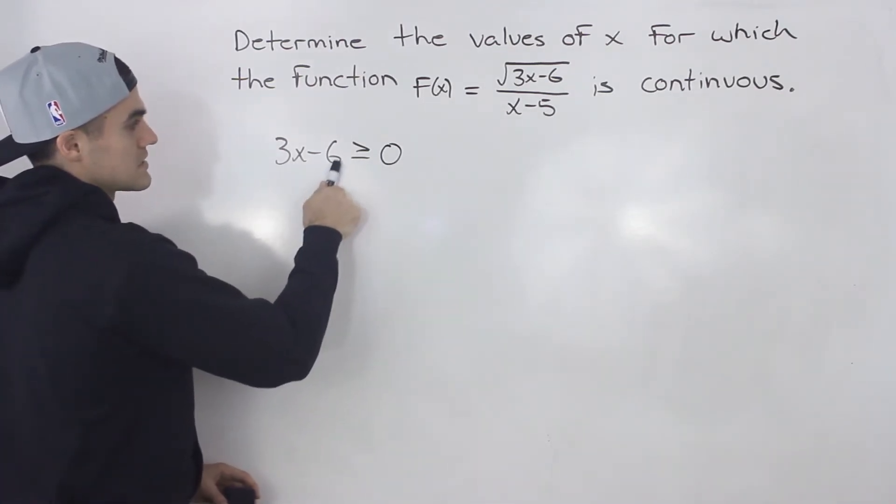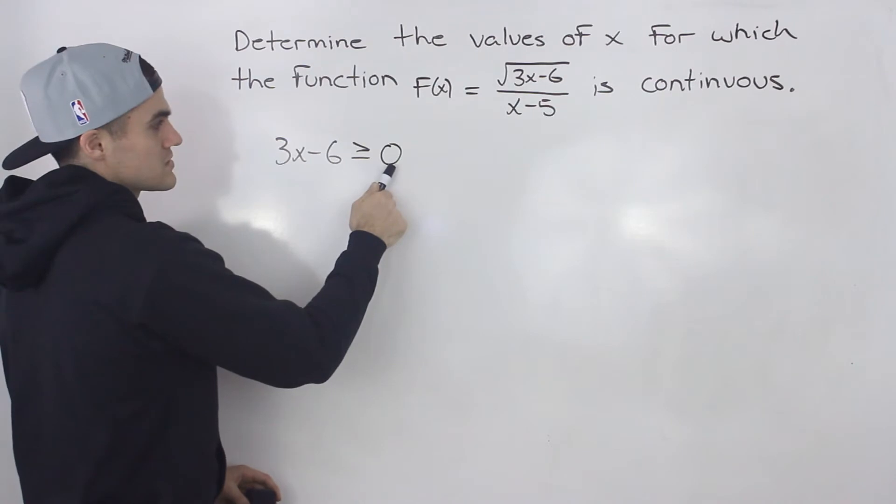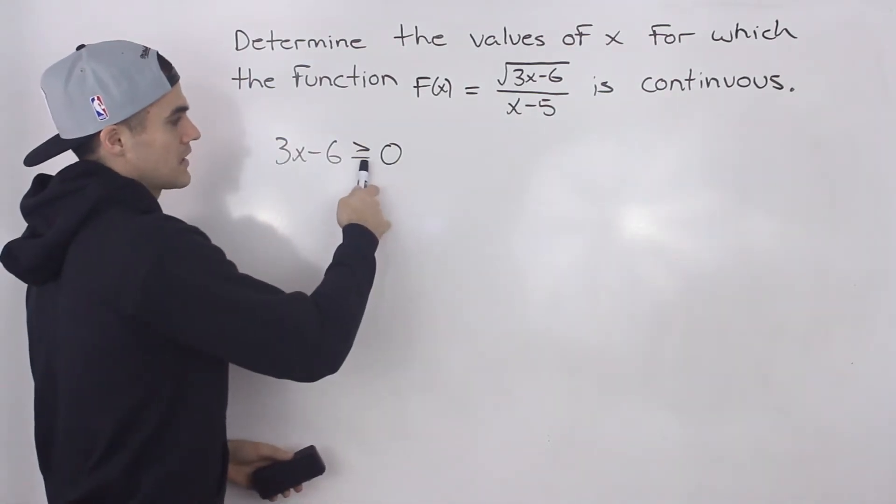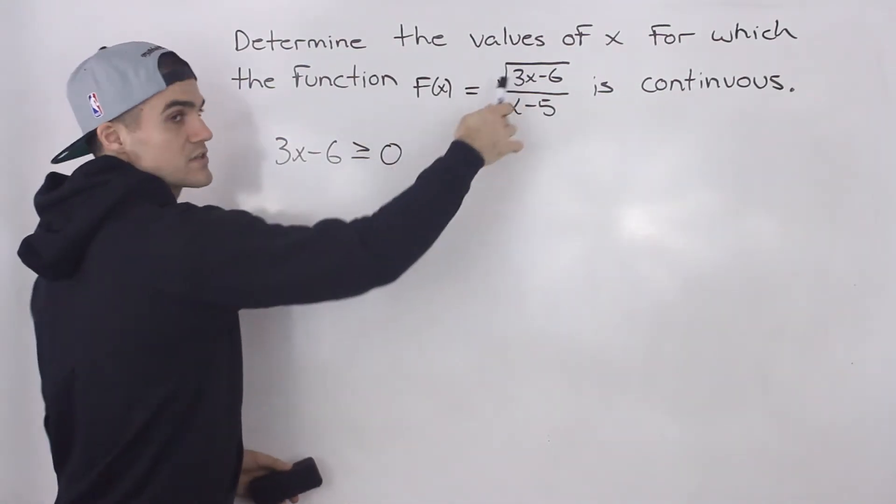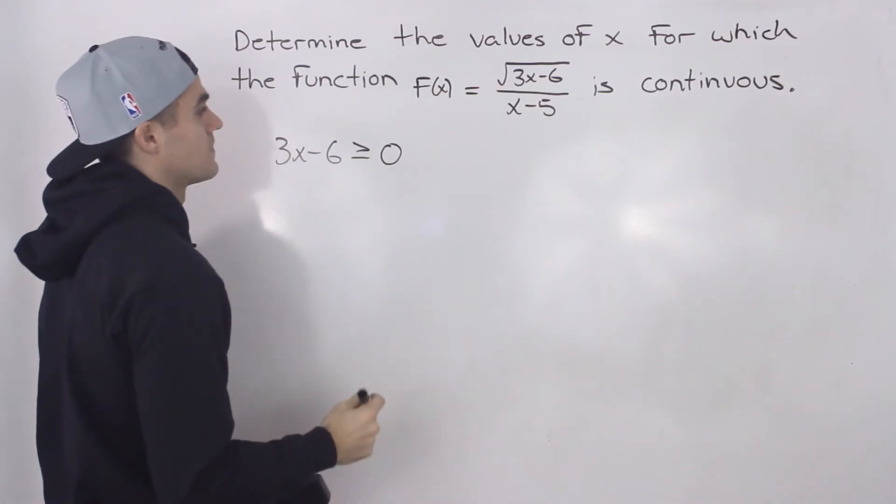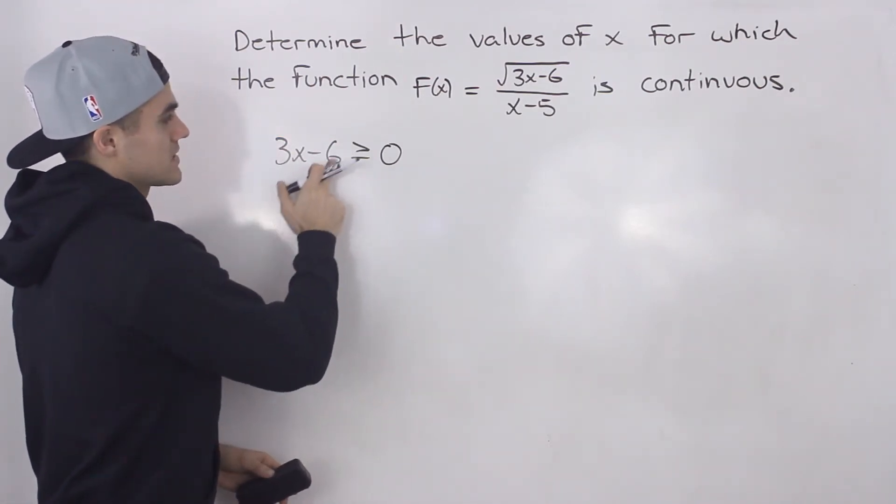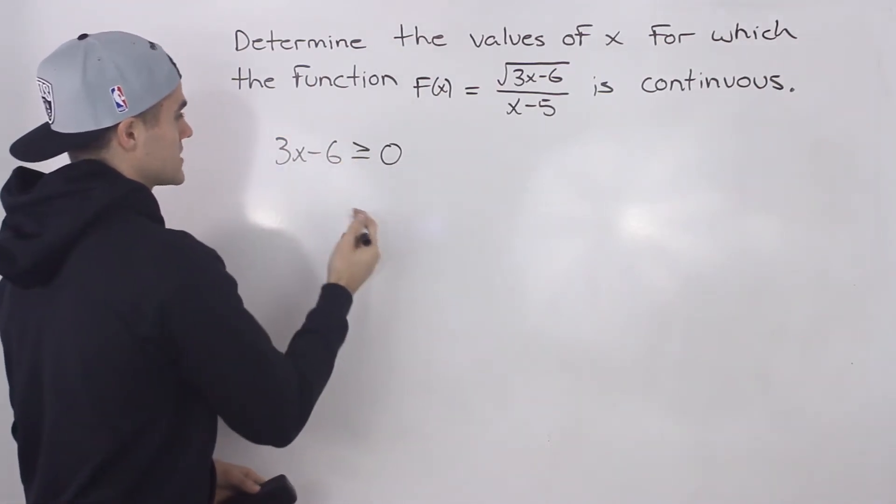So we know 3x minus 6 has to be greater than or equal to zero. The square root of zero is just zero. So 3x minus 6 greater than or equal to zero. When's that going to happen?